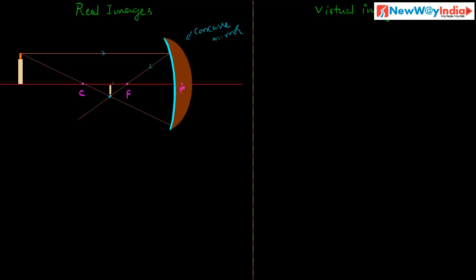What are the characteristics of this image? This is a real image and it is an inverted image. It is a real image because the two rays are convergent here — according to the definition, the two rays converge at this point, so the image is formed here. This type of image is called a real image. This happens in the case of reflection.